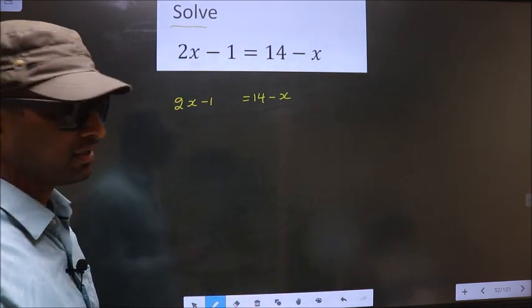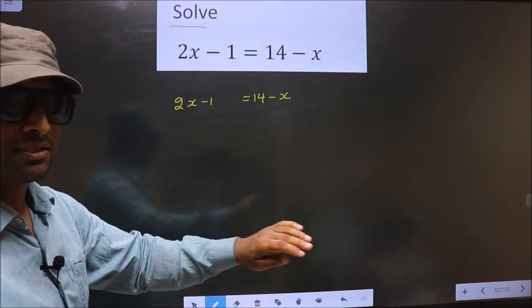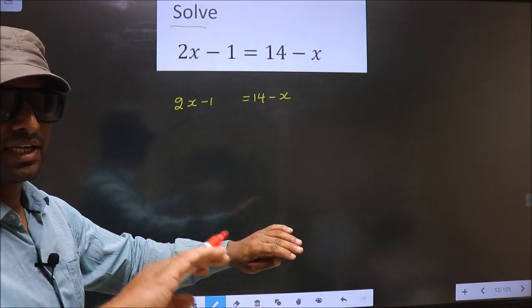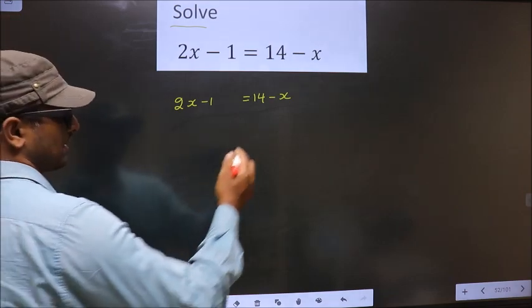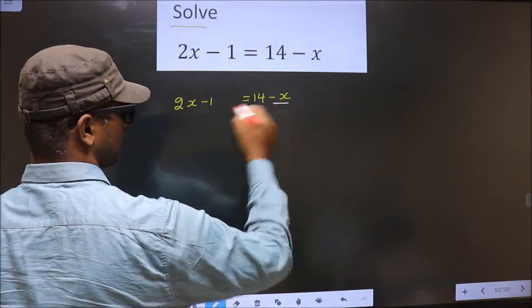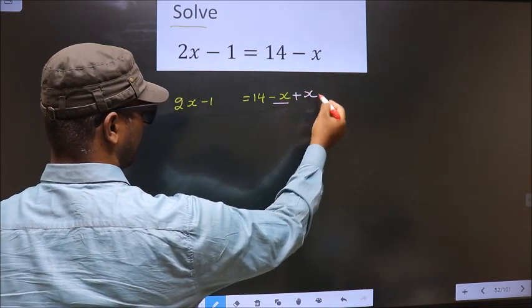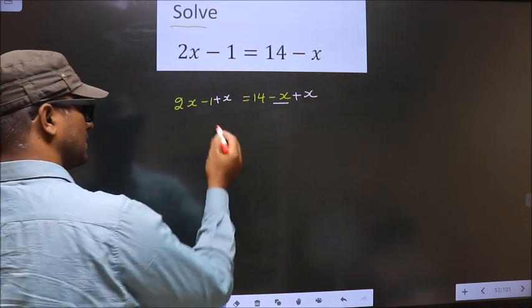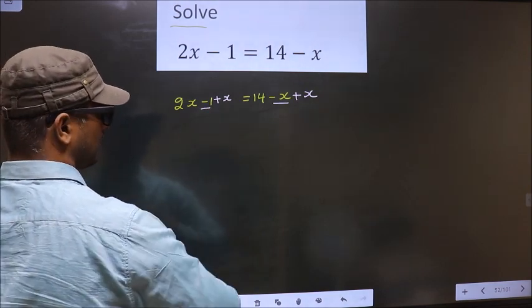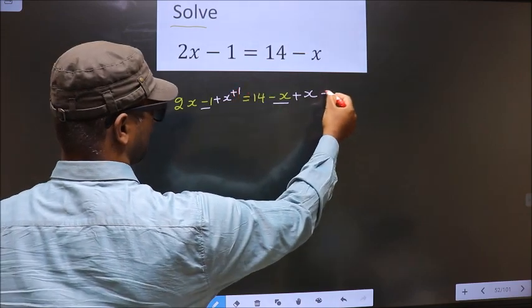Okay, now for this equation, all the letters on one side and all the numbers on one side. What I mean is minus x should not stay here, so to remove minus x from here you add x on both sides. In the same way, minus 1 should not stay here. To remove minus 1, you add 1 on both sides.